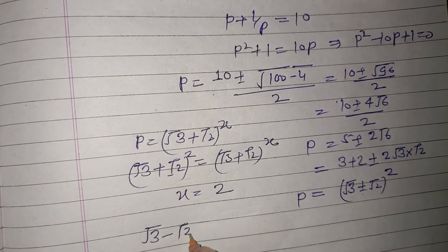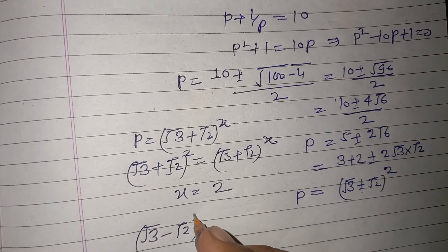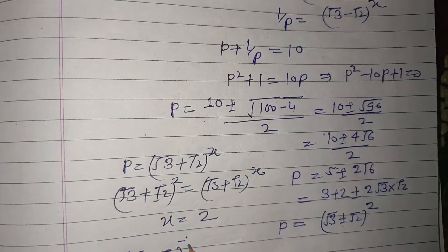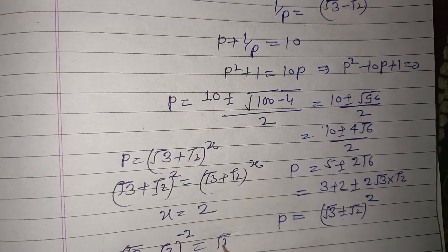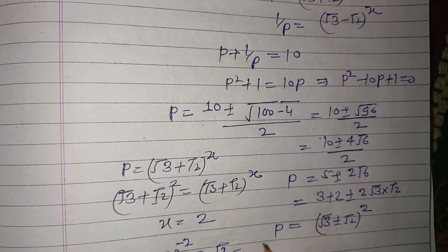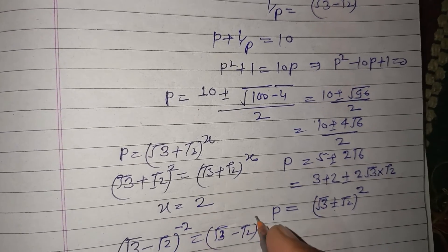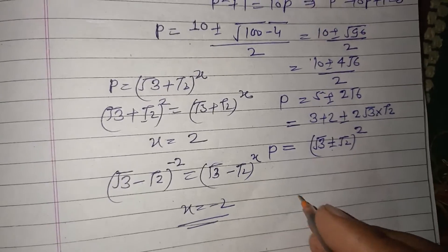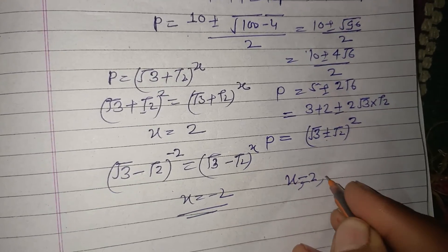When we use √3 - √2, this is also the whole square. Since this is the inverse, (√3 - √2)² = (√3 - √2)^x gives x = -2. So the values of x are 2 and -2.